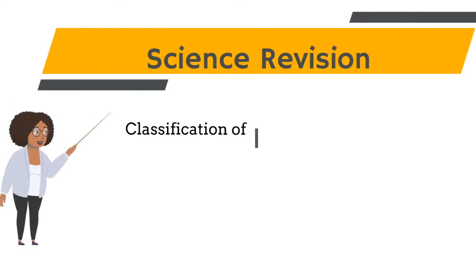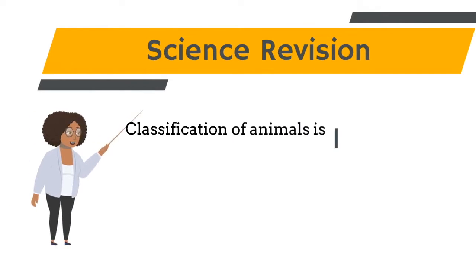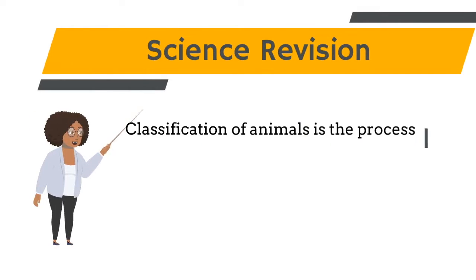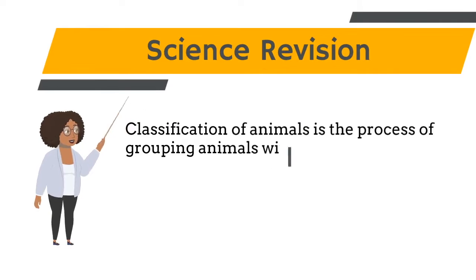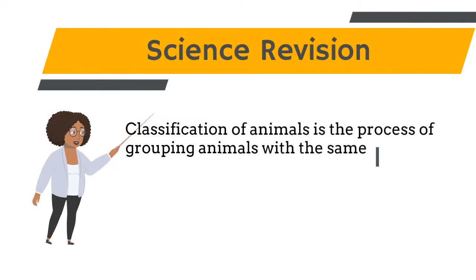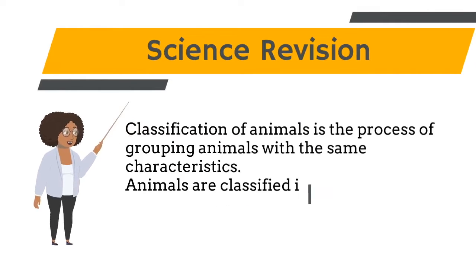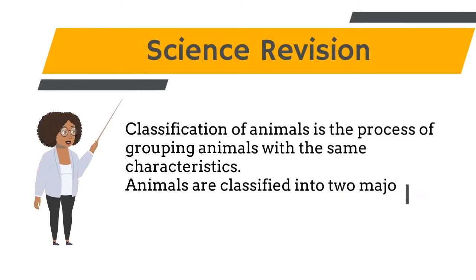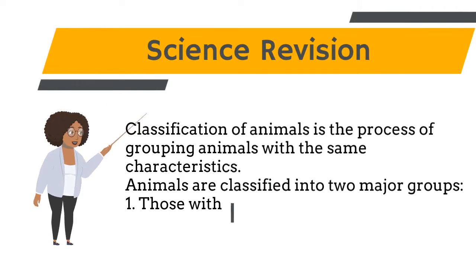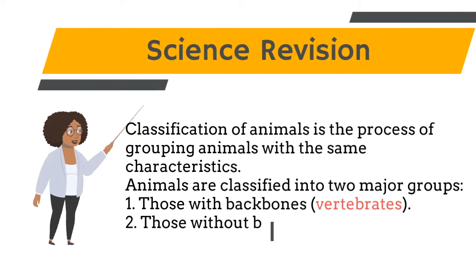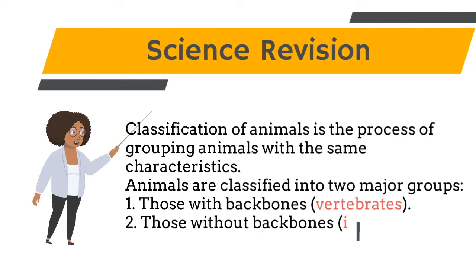Classification of animals is the process of grouping together animals that have the same characteristics. Animals are classified into two major groups: animals with a backbone, called vertebrates, and animals without a backbone, called invertebrates.